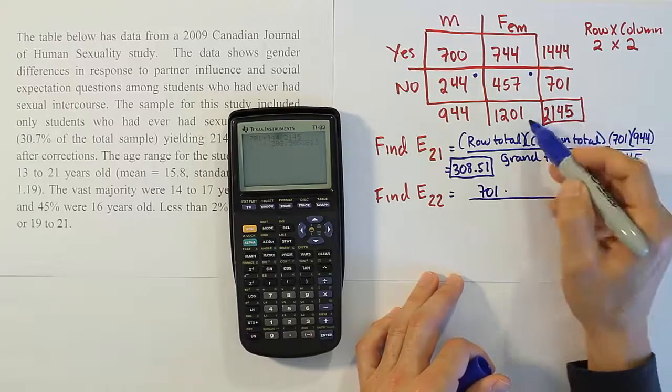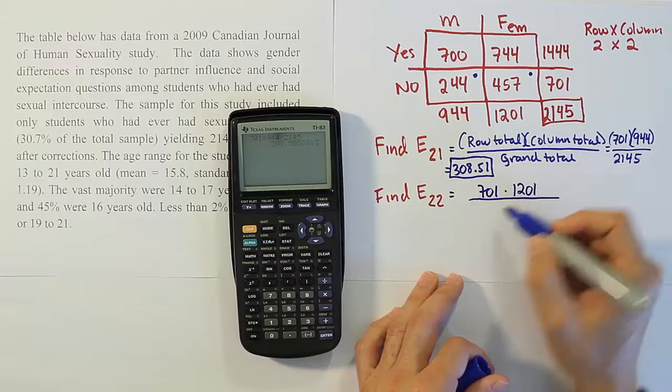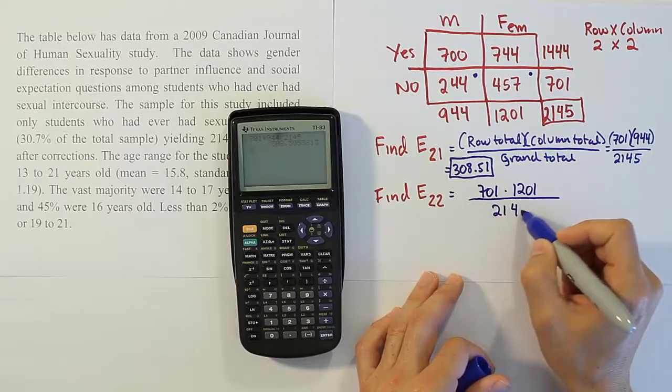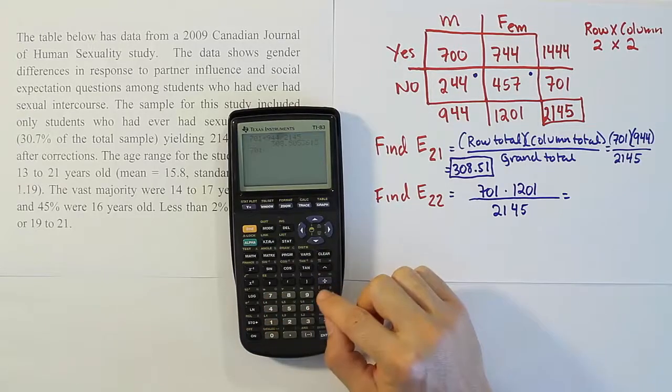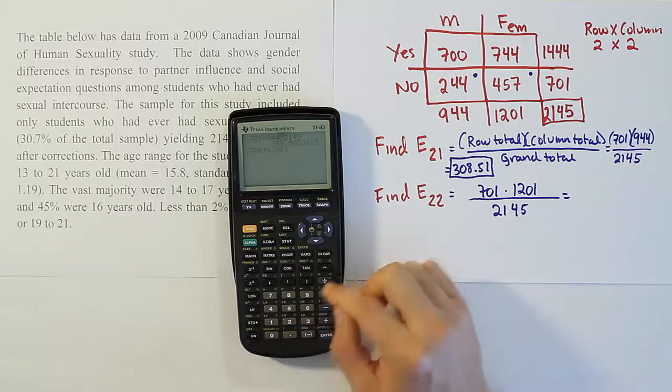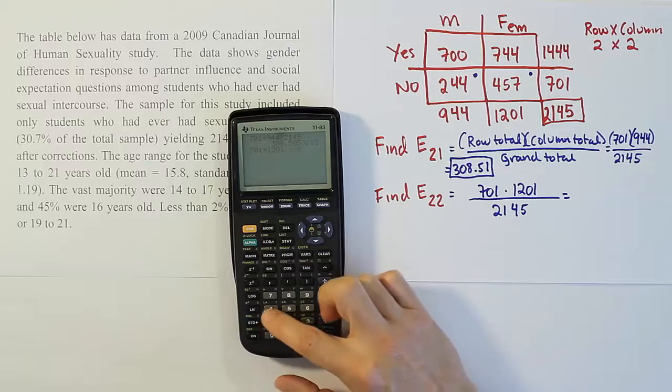For this guy, it's 1201. Divided by the grand total, 2145. And we can work that out. It's 701 times 1201 divided by 2145.